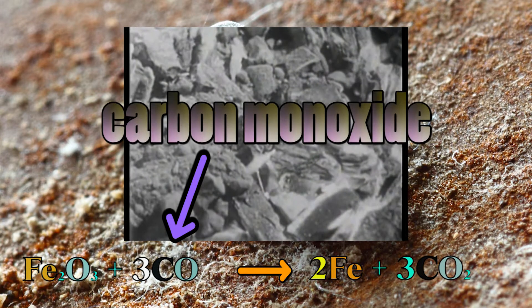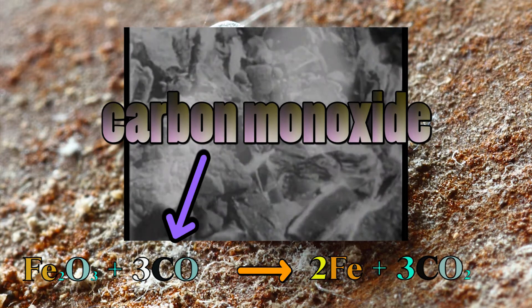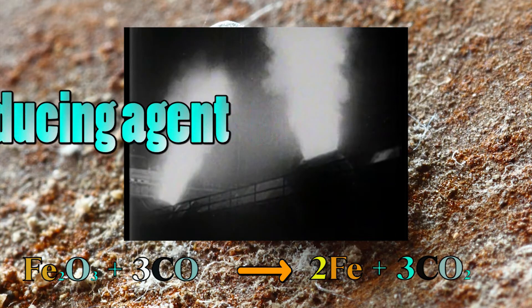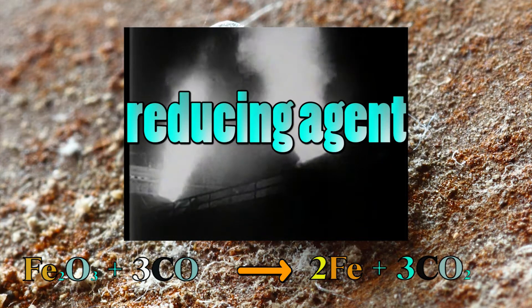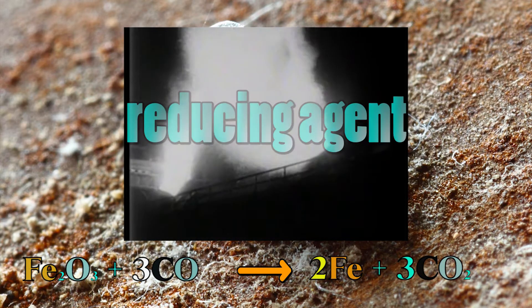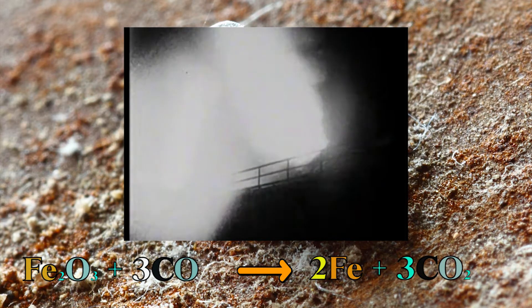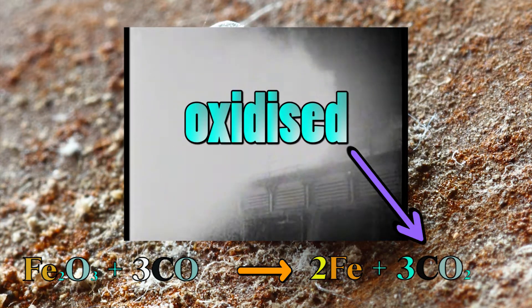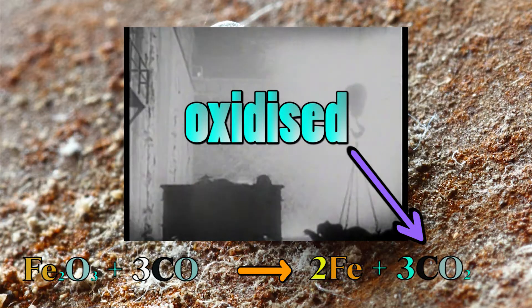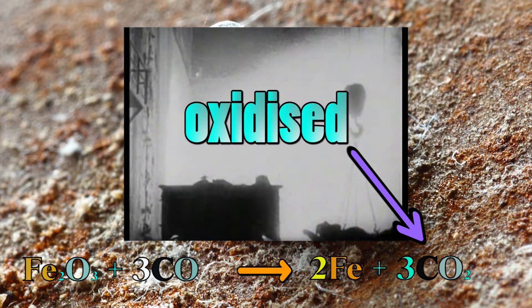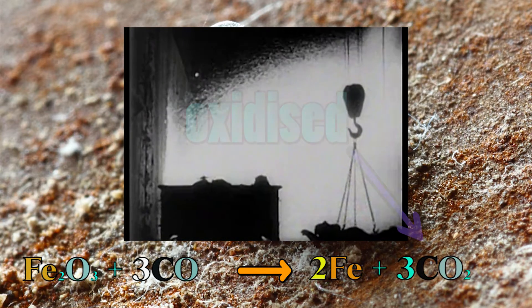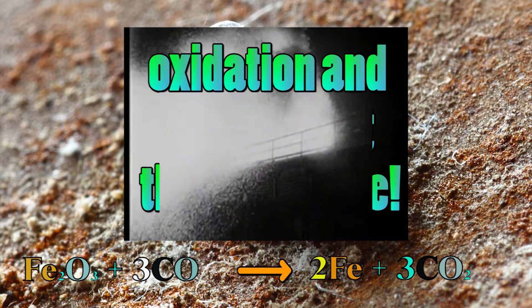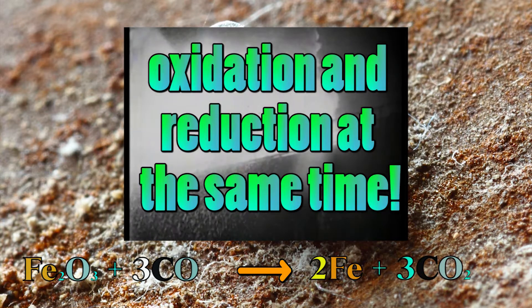It loses oxygen, leaving iron behind. Note: the carbon monoxide is what we call the reducing agent. Also observe: the carbon monoxide is oxidised to become CO2. This means that oxidation and reduction are happening at the same time.